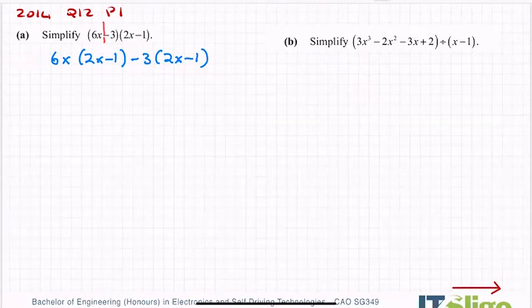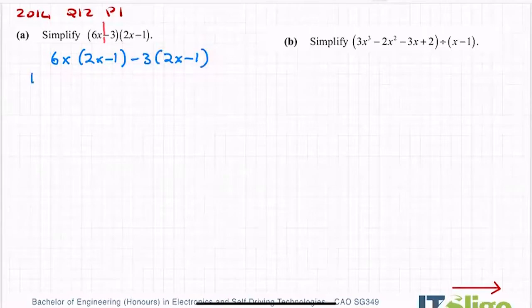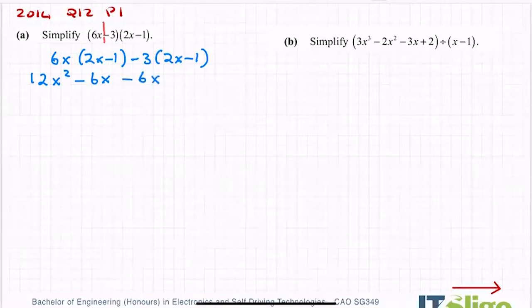So you multiply: 6x by everything inside this bracket, minus 3 by everything inside this bracket. So 6 times 2 is 12, x by x is x squared. Then 6 by minus 1 is minus 6x. And then minus 3 by 2x — minus 3 by 2 is minus 6x again.